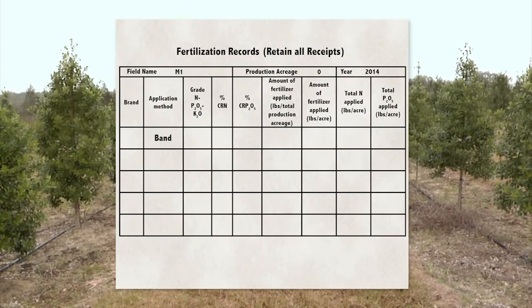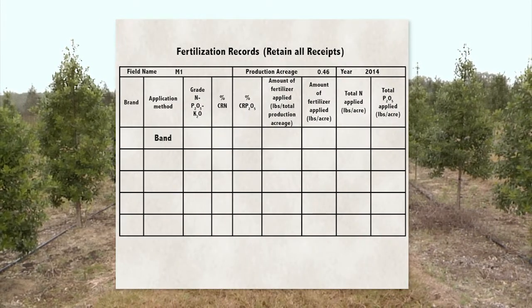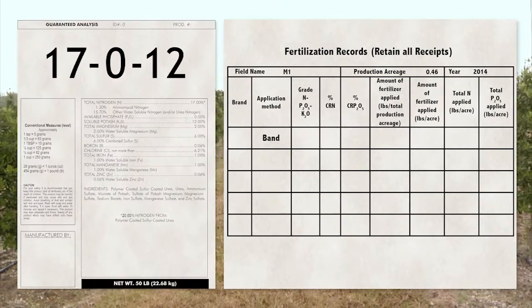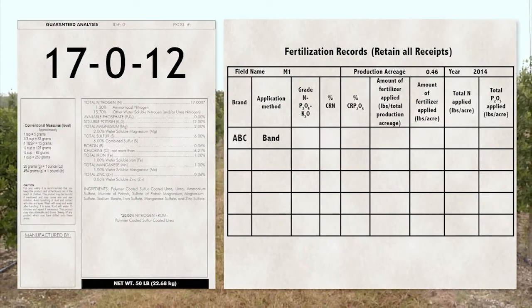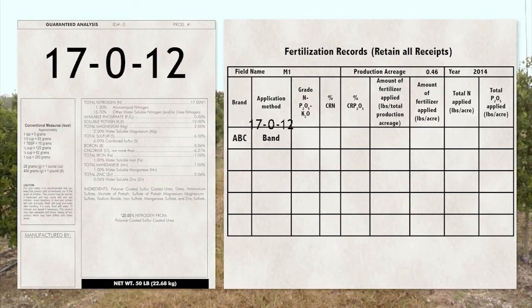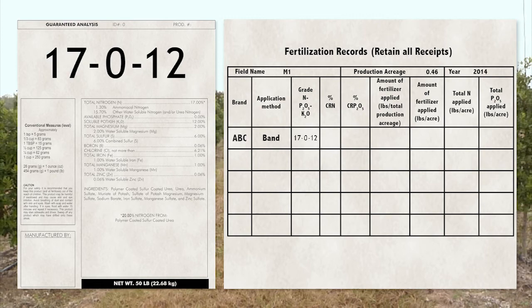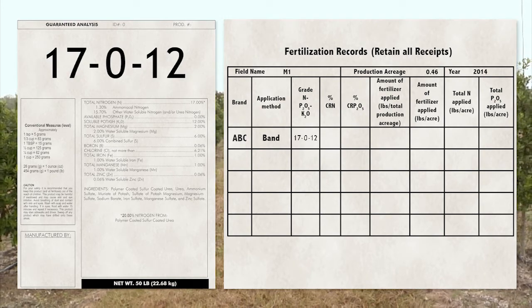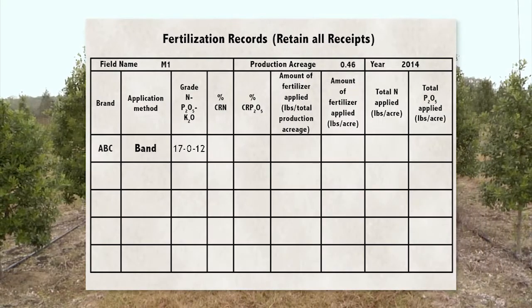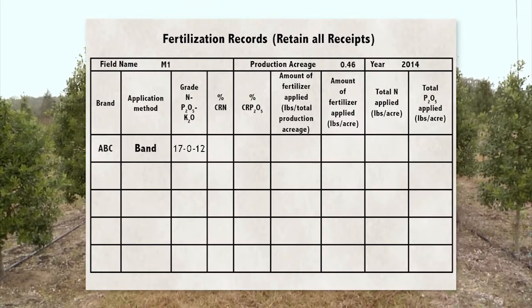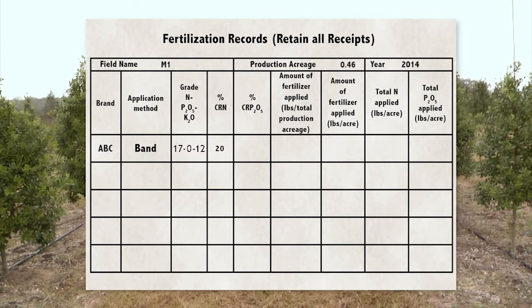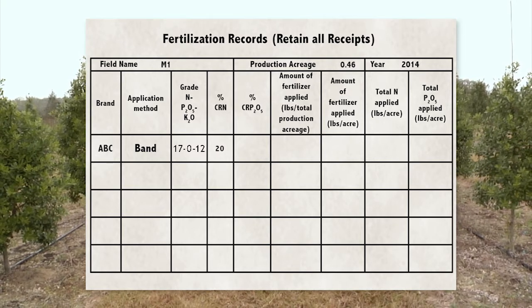Record this on the form. Next, record the fertilizer brand and grade of 17-0-12 given on the label. Also record the percentage of nitrogen and phosphorus that are from controlled release sources.